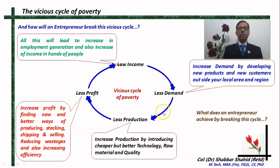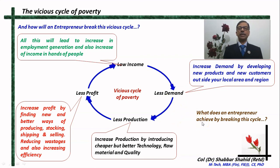But what does an entrepreneur achieve by breaking this cycle? We have seen what this vicious cycle is. We have also seen how an entrepreneur can use his innovation, ingenuity, and all those qualities to break the cycle of poverty. But the question is: what does an entrepreneur get by breaking this vicious cycle of poverty? We shall see that in the next lesson.